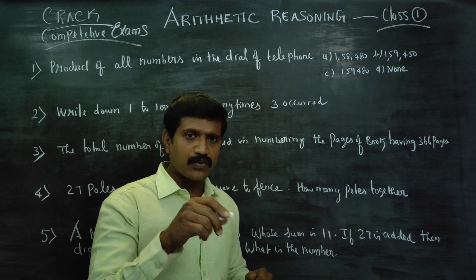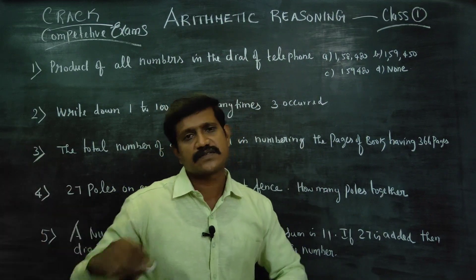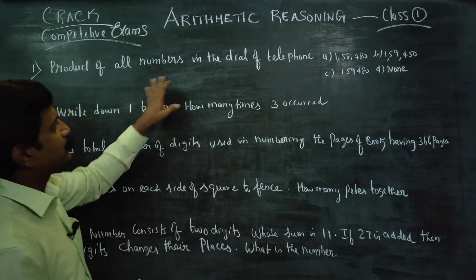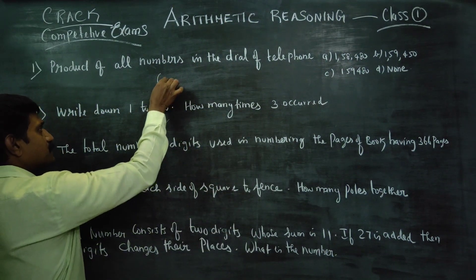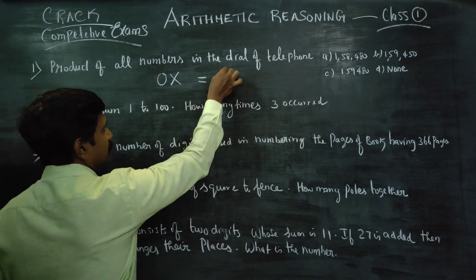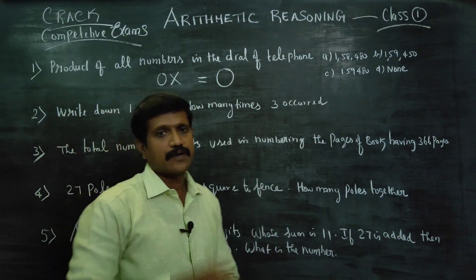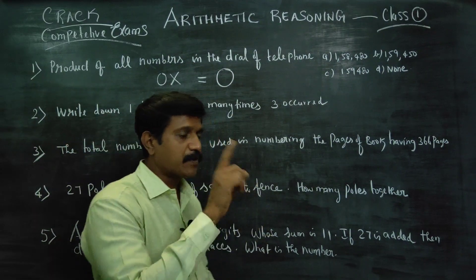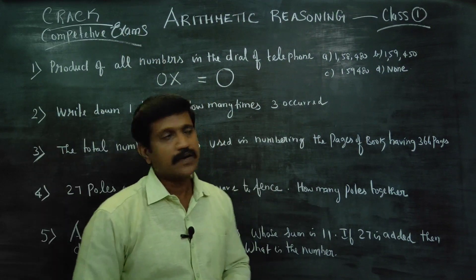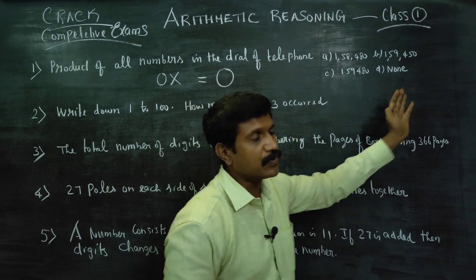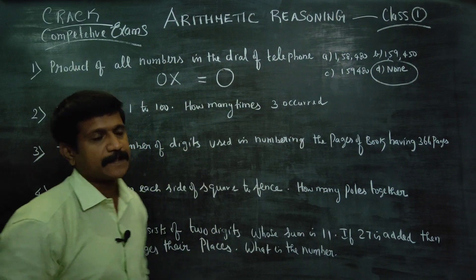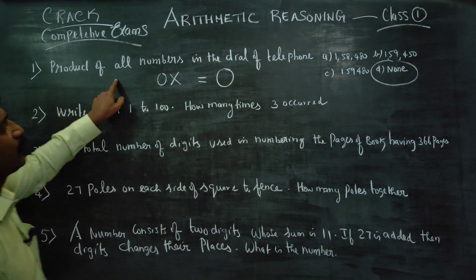The rough work is: 1, 2, 3, 4, 5, 6, 7, 8, 9, 10. It's very simple. This is the product of all numbers.